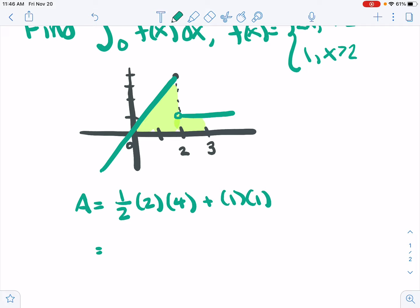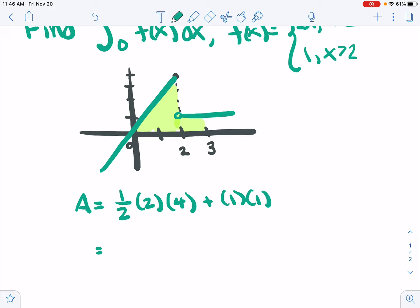So in the end, we have 2 times 4 is 8, divided by 2 is 4, plus 1. We have 5 as the area under that curve, the value of this definite integral. And we got there again just through geometric considerations.